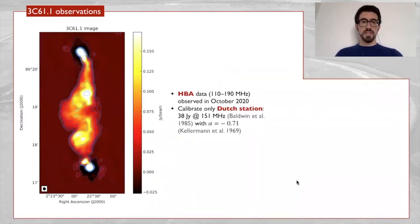Then we apply the method also to observations of 3C61.1. In this case we don't have a previously known spectral index map, so we have to calibrate the data using amplitude values from the literature.